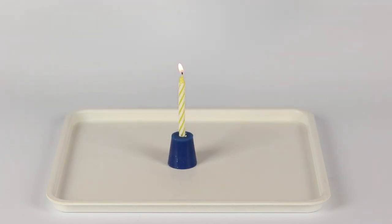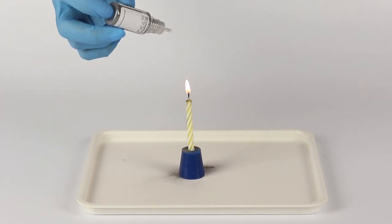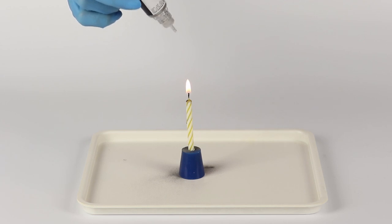Now, pepper the burning candle with iron powder. Pour iron powder onto the flame in small doses. Try this from different heights and angles.